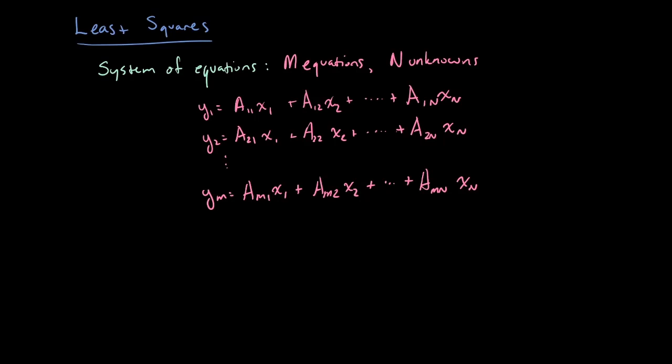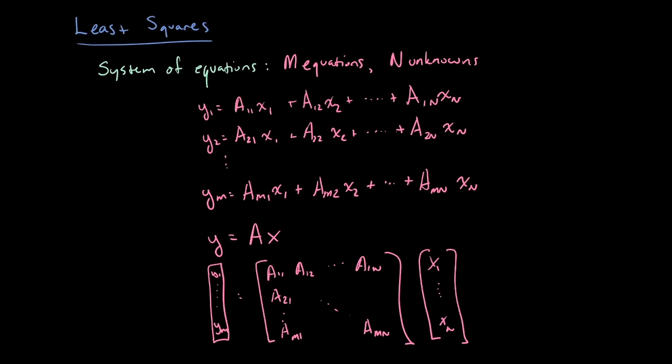Whenever we're encountering a large system of equations like this, it's usually much more convenient to express everything in terms of matrices and vectors. We would write this as y equals Ax where y is the vector of y1 up to ym, x is the vector of x1 up to xn, and A is an m by n matrix.